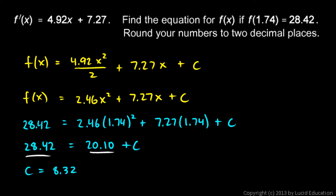So then you can write your answer. Just put that number in right there. So your answer then is, or actually let's put it in here in the simplified version. f of x is 2.46 x squared plus 7.27 x plus 8.32. And that's the answer.